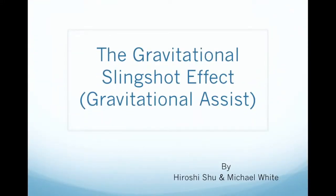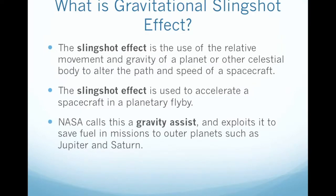What is the gravitational slingshot effect? The slingshot effect is the use of the relative movement and gravity of a planet or other celestial body to alter the path and speed of a spacecraft. It is used to accelerate a spacecraft in a planetary flyby. NASA calls this a gravity assist and exploits it to save fuel in missions to outer planets, such as Jupiter and Saturn.